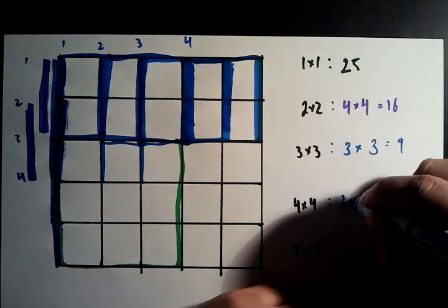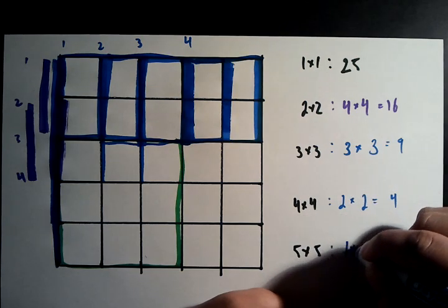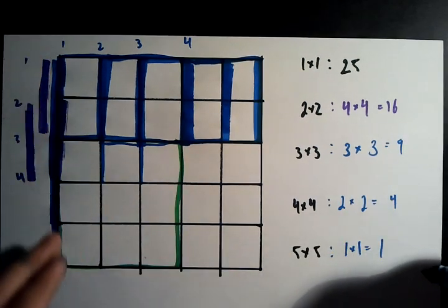And we're going to find 4x4 is the same type of thing. 2 times 2 equals 4. And 5x5, 1 times 1 equals 1. And we see that because there's only 1 possible 5x5, the biggest square.